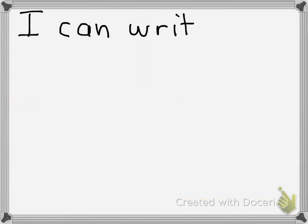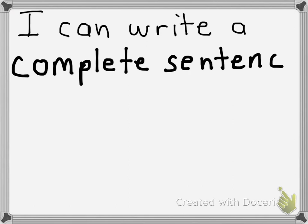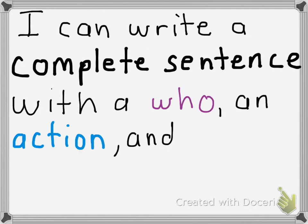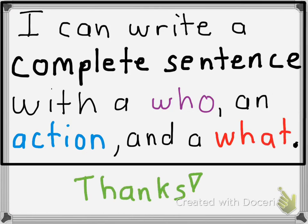So what did we accomplish today? Well, this is what you did and what we're going to practice some more. Remember, say this and read this with me. I can write a complete sentence with a who, an action, and a what. Let's try that again. I can write a complete sentence with a who, an action, and a what. That's what we're going to do right now. We're going to practice it.